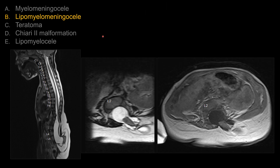For other choices, we already talked about why choices A, D, and E are not the better choice here. And for teratoma, I would like to show you a case that has a more heterogeneous mass lesion rather than just a distal spinal cord extending into fatty tissue. So choice C is also not the better answer compared to lipomyelomeningocele.